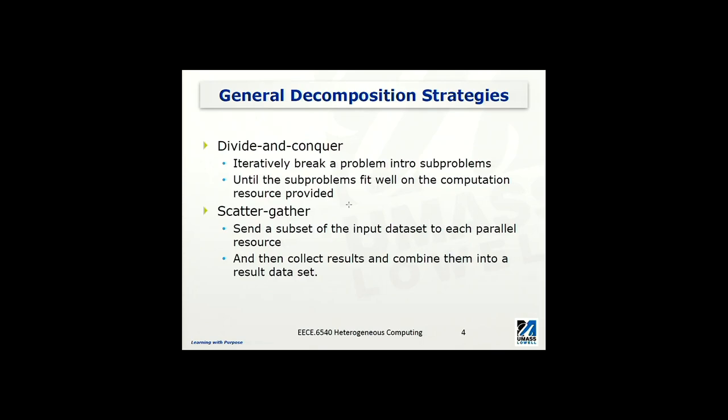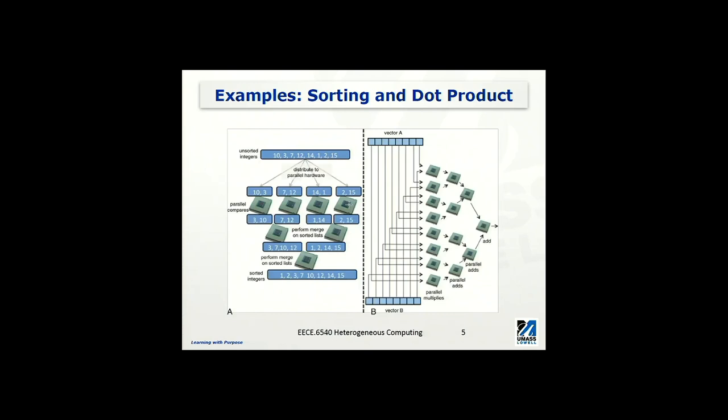Scatter-gather is, on the other hand, to send a subset of the input data to each parallel resource. And after the computation is done, to collect the results and combine them into the result dataset. So these two are talking about two different things, but oftentimes they have to be used in the same single solution.